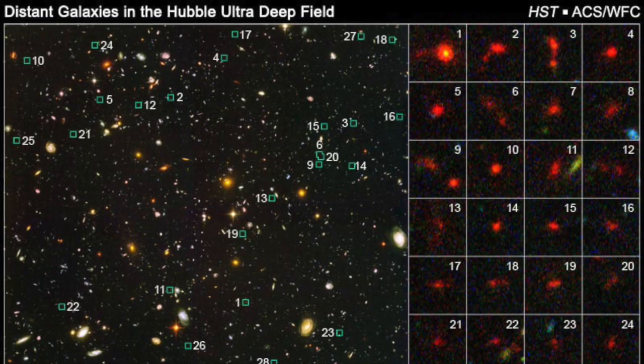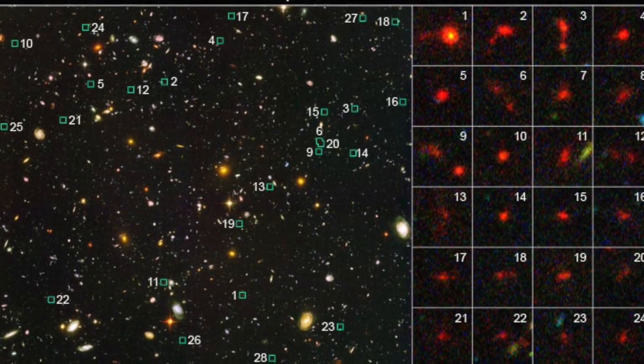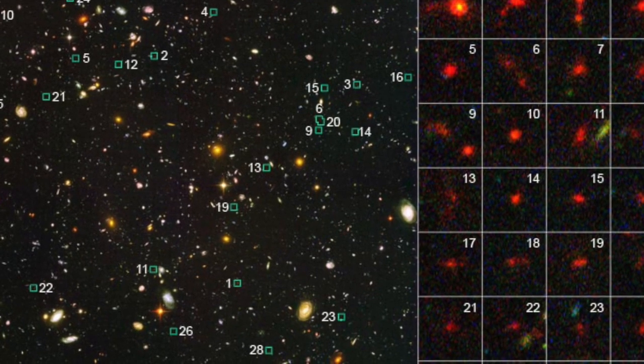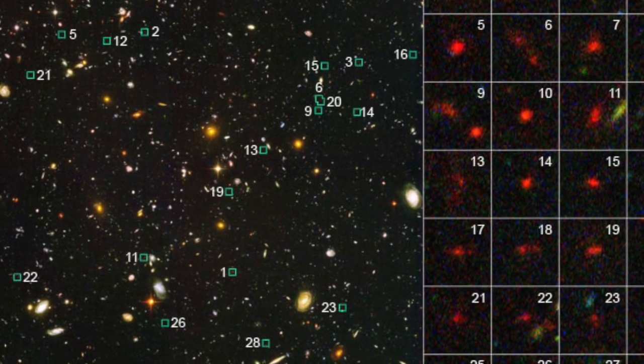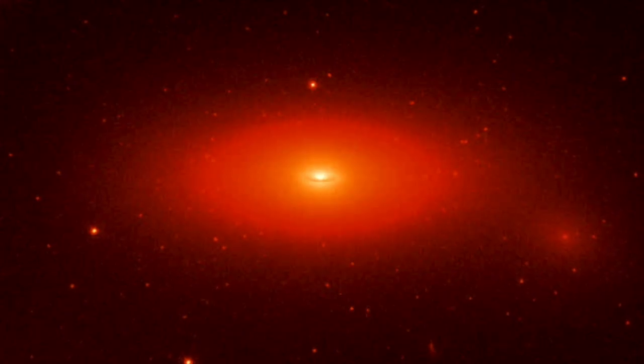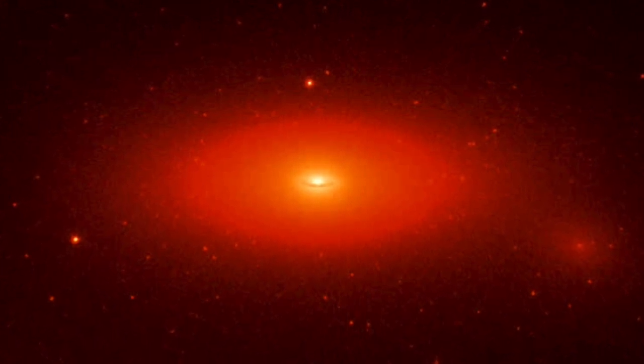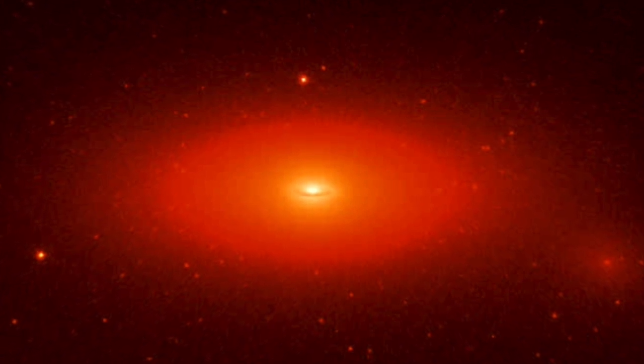Other supermassive black holes have been found in very small galaxies, in almost empty space, where there isn't enough material to form them. Galaxy NGC 1277, for example, has a black hole that's about 60% the mass of its bulge. That's far too big to be formed by physicists' understanding of how accretion works.